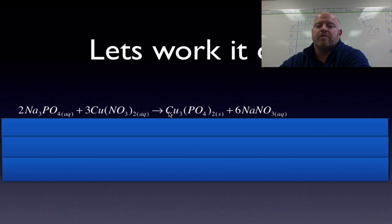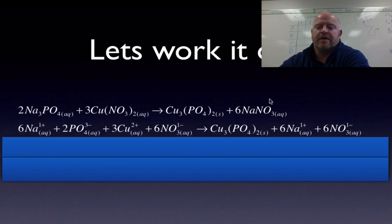Now, when they react, we make solid copper phosphate. So the copper phosphate actually has re-solidified, and it's now stuck together again. But the sodium nitrate, because it stayed in solution, we still have sodium ions floating around, not attached to anything, and we still have nitrate not attached to anything. So we can take this equation and rewrite it like this.